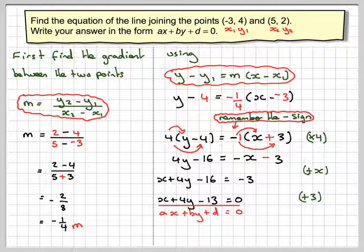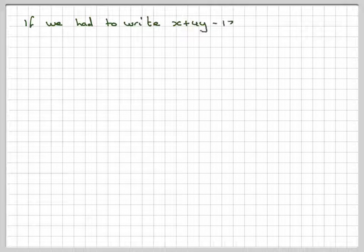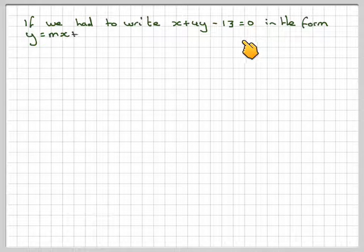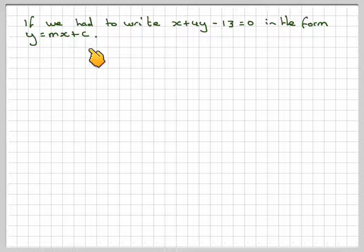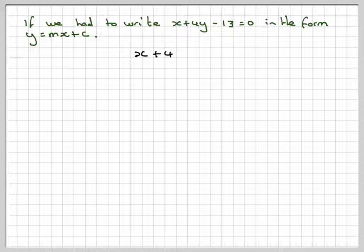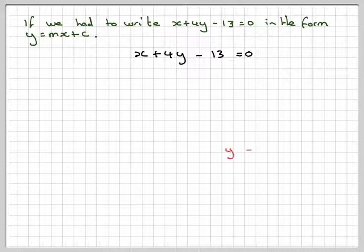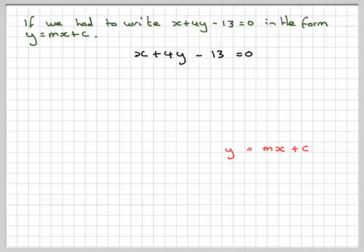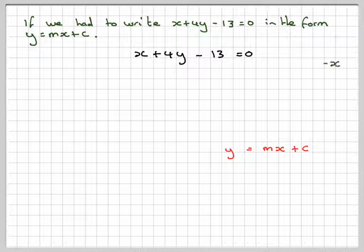Now, say, for example, I got that, and I'm asked to put it in the format y = mx + c. So if I had to write x + 4y - 13 = 0 in the form y = mx + c, writing it down, this is the desired format that we're aiming for. I'm going to leave y on this side. So first of all, I'm going to take x from both sides.